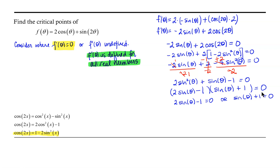For the first equation, let's add 1 to both sides and then divide both sides by 2. We get 2 sine of theta equals 1, and then sine of theta equals 1 half.